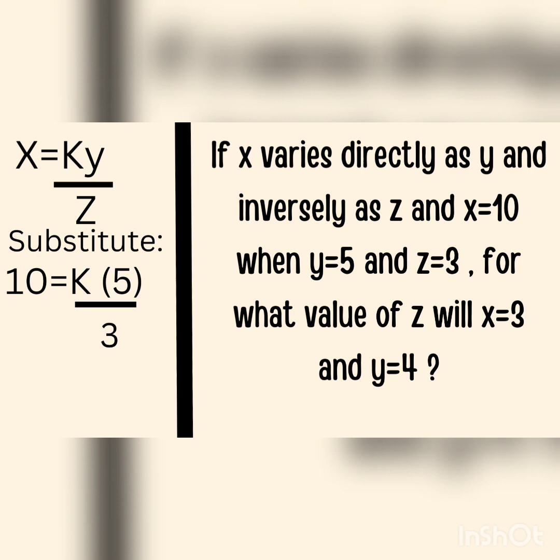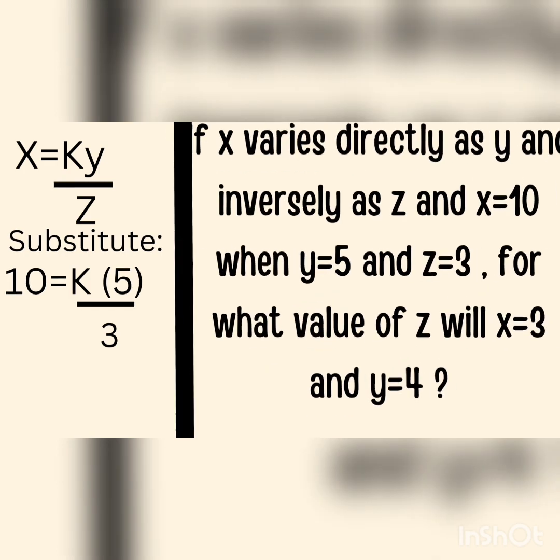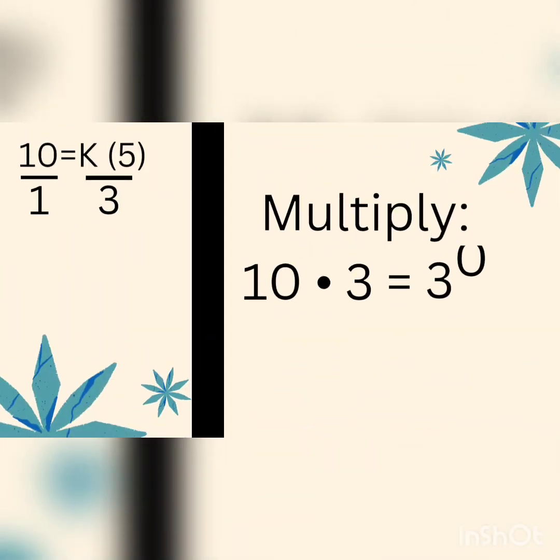Next is, we solve it by doing cross multiplication. Now, in doing the cross multiplication, it'll be 10 over 1 equals k5 over 3. Multiply it: 10 times 3 equals 30, and 1 times 5 equals 5.